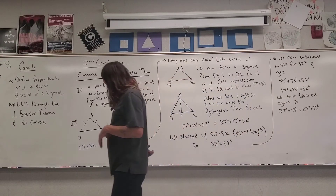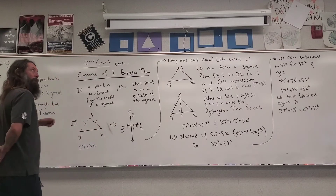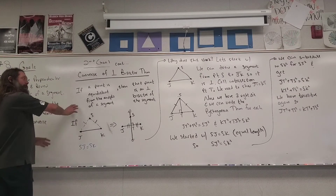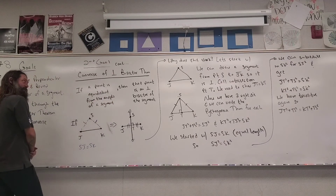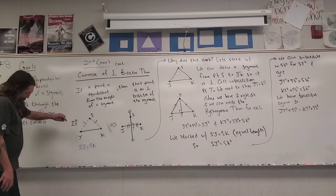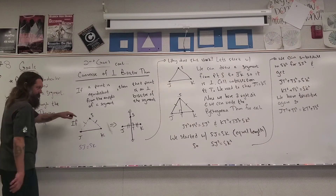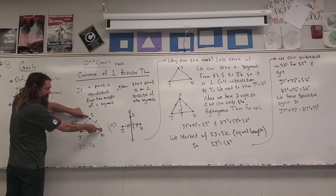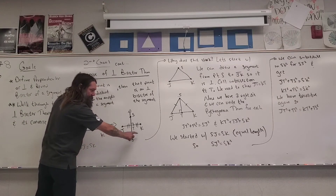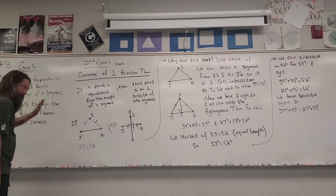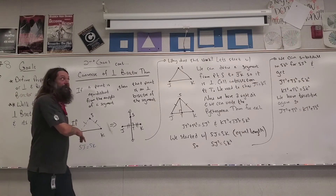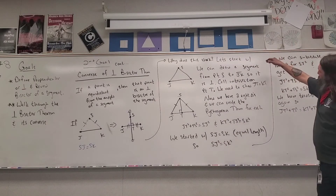Now we'll walk through why the converse of the perpendicular bisector theorem is true. Remember, the converse switches the hypothesis and conclusion. Converse: if a point is equidistant from the endpoints of a segment, then that point is on the perpendicular bisector of the segment. The segments in the picture are dashed — they're not really there. The hypothesis is that point S is the same distance from K as it is from J; the conclusion is that S must be on the perpendicular bisector of segment JK.